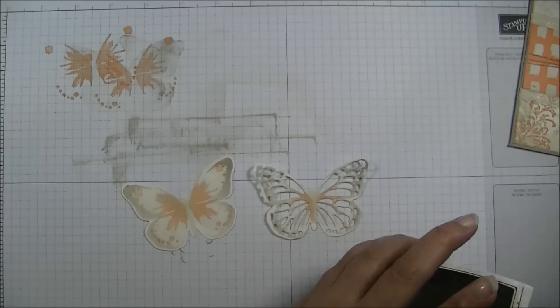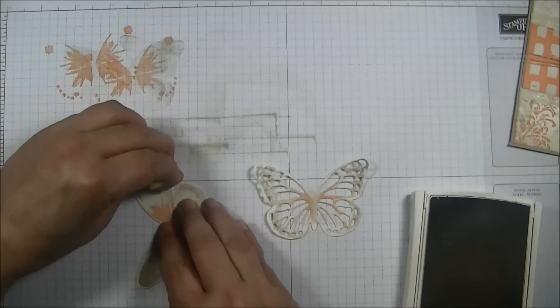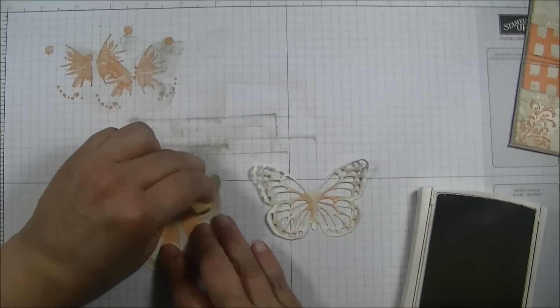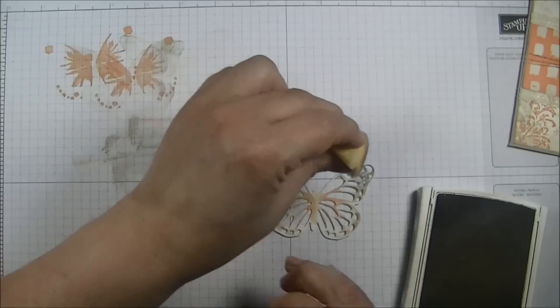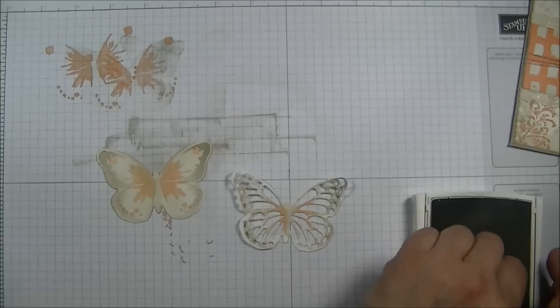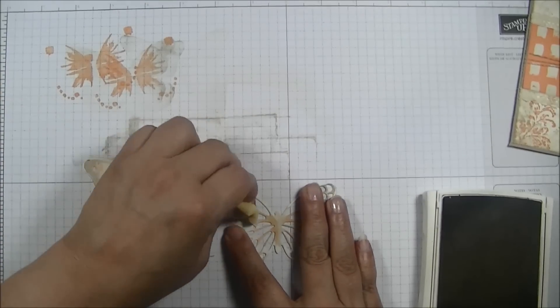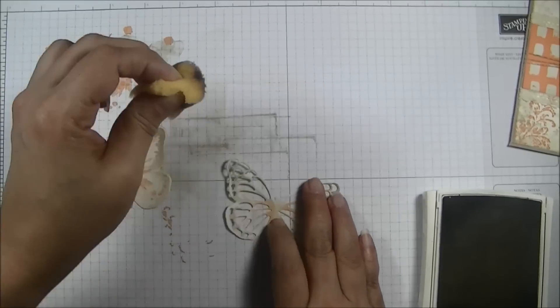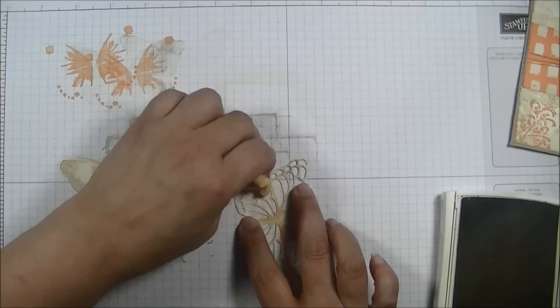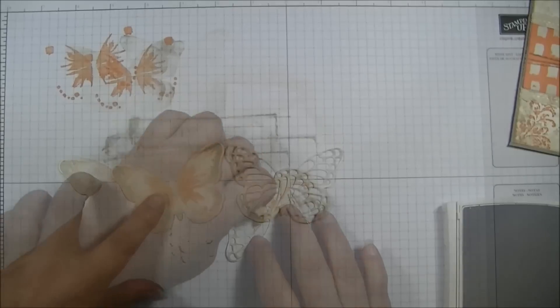I am going to go ahead and grab my Sahara Sand. And I am going to add a little bit of distressing around the edges of my butterfly. I am just going to tone them down a bit. I will do the same thing for this one. I will be a little more gentle since it is a little more delicate. So just going around my edges and toning down the very vanilla so that it looks a little aged.